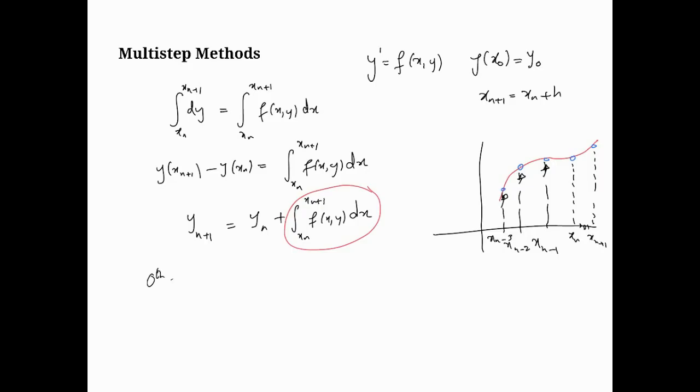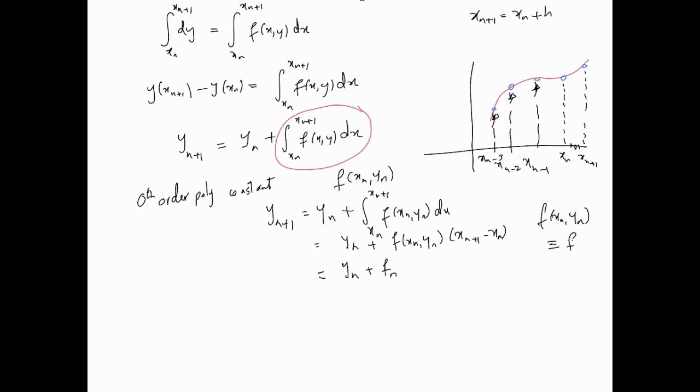If we start taking some of these points, in other words points from the past, then that could possibly lead to an interesting new method. If we're going to fit a polynomial to f of xy, we need points on f of xy. This is standard interpolation, given a set of points x and y, approximate a polynomial that fits that data. If we were to use the zeroth order polynomial, which is just a constant, and use xn, yn, the present point, that would mean f of xn, yn, or fn for short. Now xn+1 minus xn is the fixed h. If you look at this, that's Euler's method. This new technique is generating a good method for solving differential equations, one we've seen before, Euler's method.